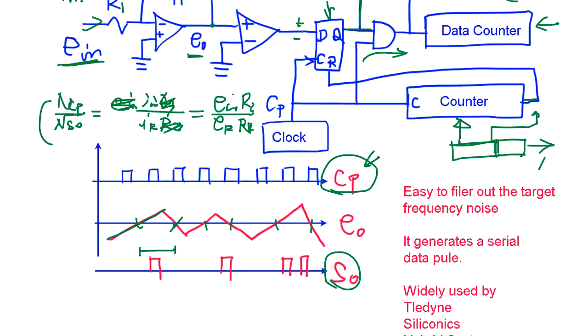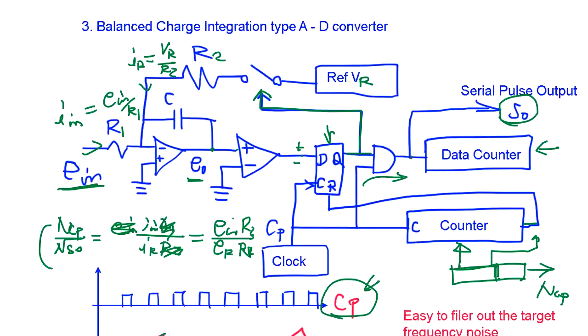This is going to be NCP, and when you count the pulses appearing here, data counter is going to be NSO.